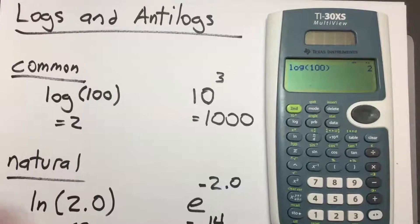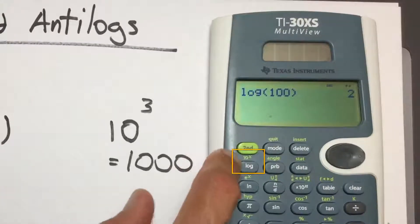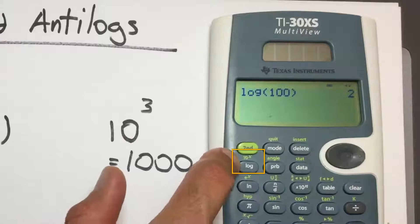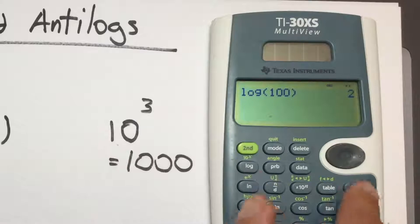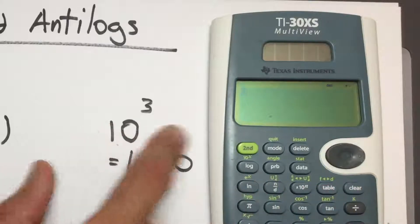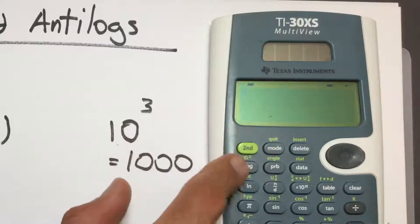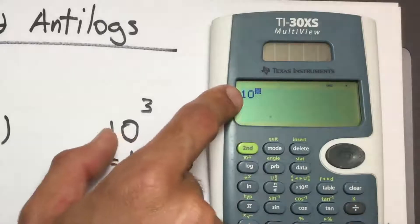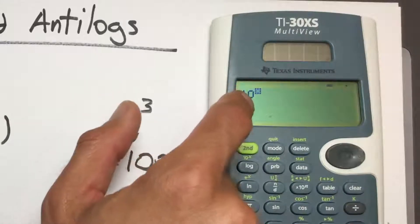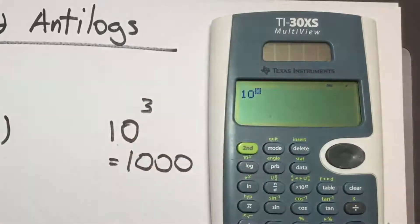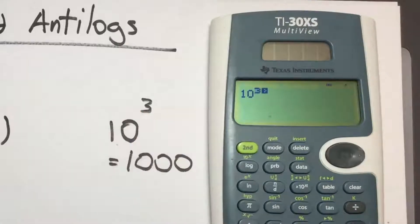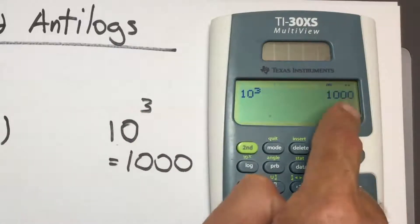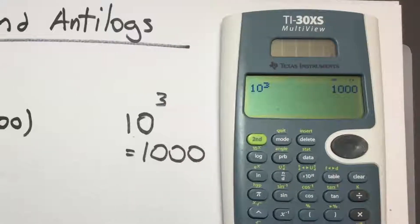To take the antilog, we use the same button. In the green text above it we have 10 raised to the x — that's the same thing as the antilog. Clear the screen, press 2nd, and press the LOG button. It gives us 10 and then a box above it to show an exponent is coming. Enter the exponent 3 in that position and press enter. This gives us 1000 — the correct answer.